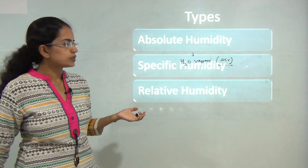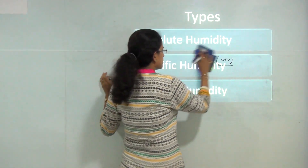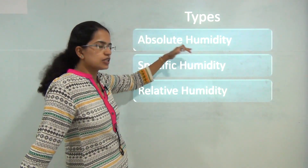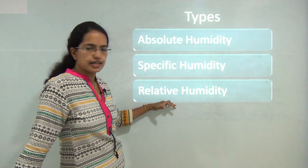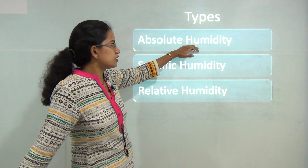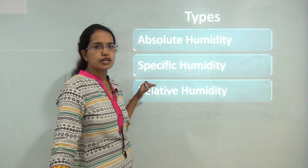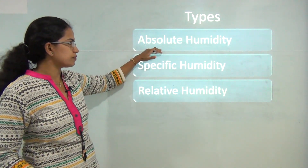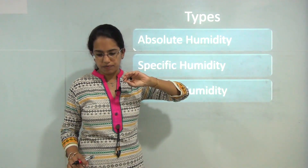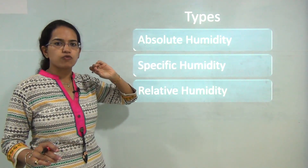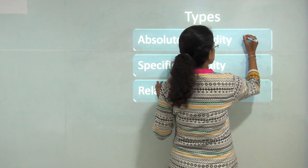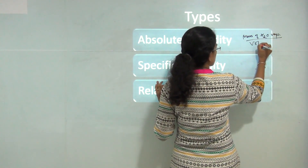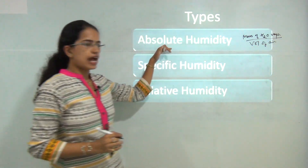Let's first start with the types of humidity. When we describe the various types of humidity, we can explain humidity in three simple types: first is absolute humidity, specific humidity, and relative humidity. Absolute humidity is the actual amount of water vapor that is present in the atmosphere — specifically, the mass of water vapor present per unit volume of air. So mass of water vapor divided by volume of air helps you understand absolute humidity.